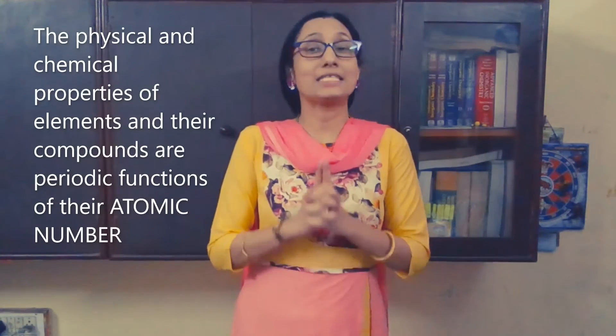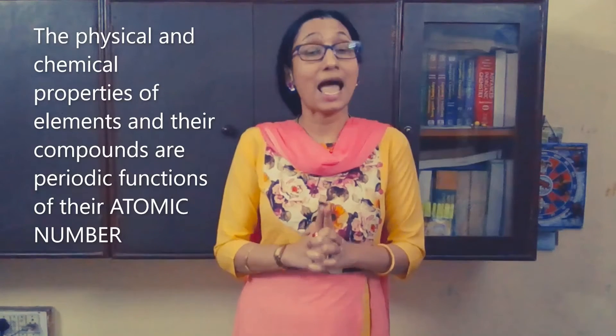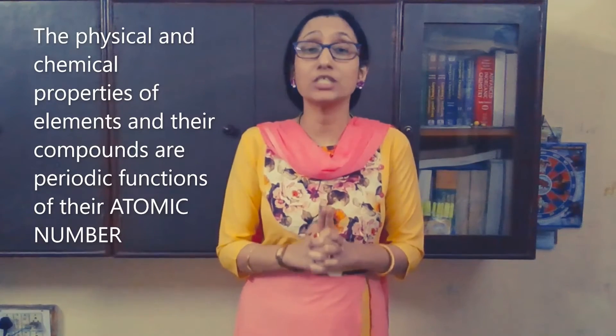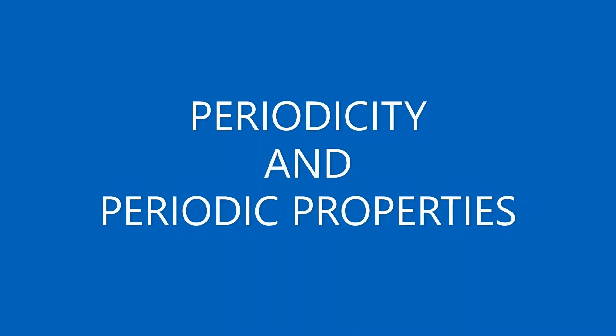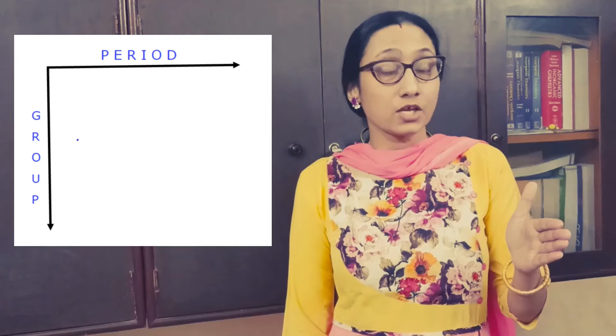Now we will state Moseley's periodic law, or the modern periodic law: the physical and chemical properties of elements and their compounds are periodic functions of their atomic number. In a periodic table, the horizontal rows are known as periods and the vertical columns are known as groups.